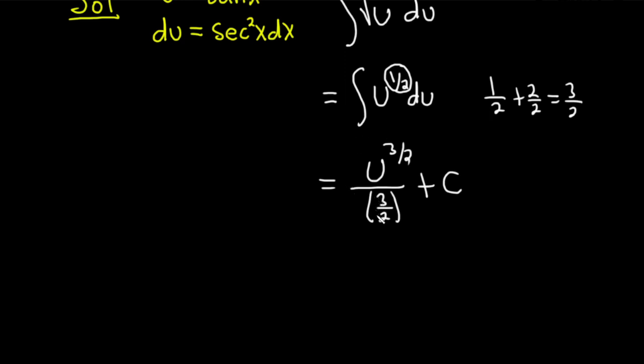And when you divide by three halves, you really multiply by two thirds. So this is u over three. And then u, well, u is tangent. So this is parentheses tangent of x, parentheses to the three halves, plus C.